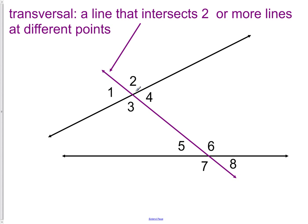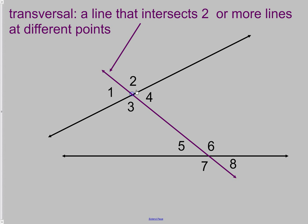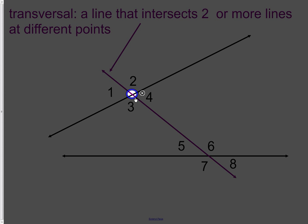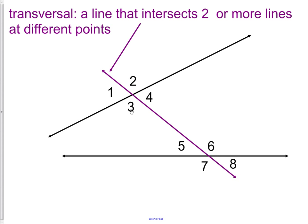So in our picture here, the purple line is the transversal. It crosses the first black line in that area that I've just circled, and it crosses the other black line down here. Therefore, we can call the purple line a transversal. It crosses two or more lines at different points.